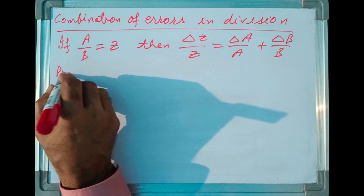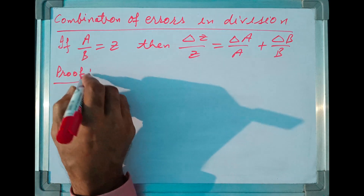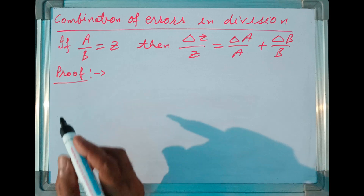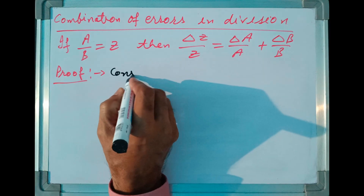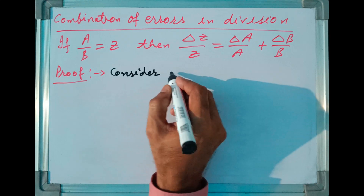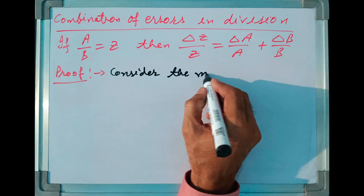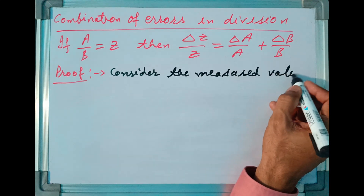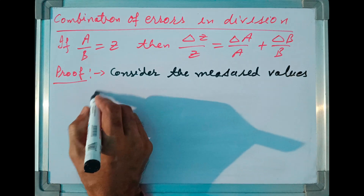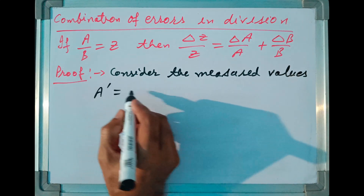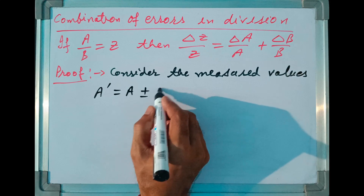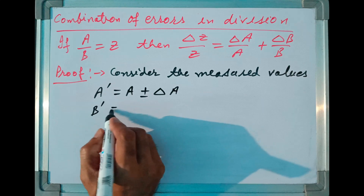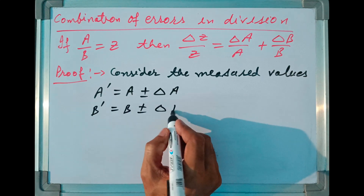Now let us prove this rule for combination of errors when we divide two quantities. For proving, let us consider the measured values of various quantities. The measured value of quantity A can be written as A dash equal to its actual value plus or minus the absolute error in measurement of A. Similarly, we can write B dash equal to B plus or minus Delta B.